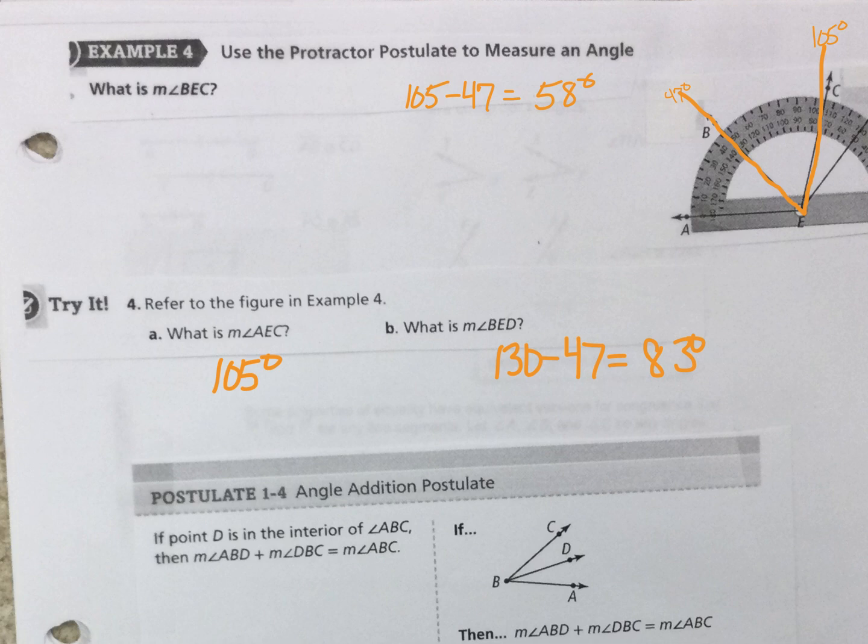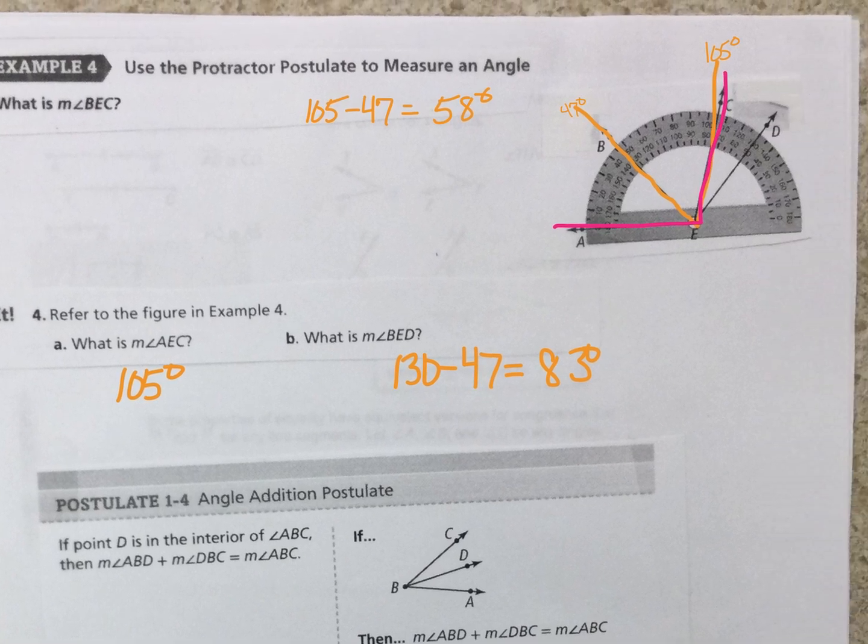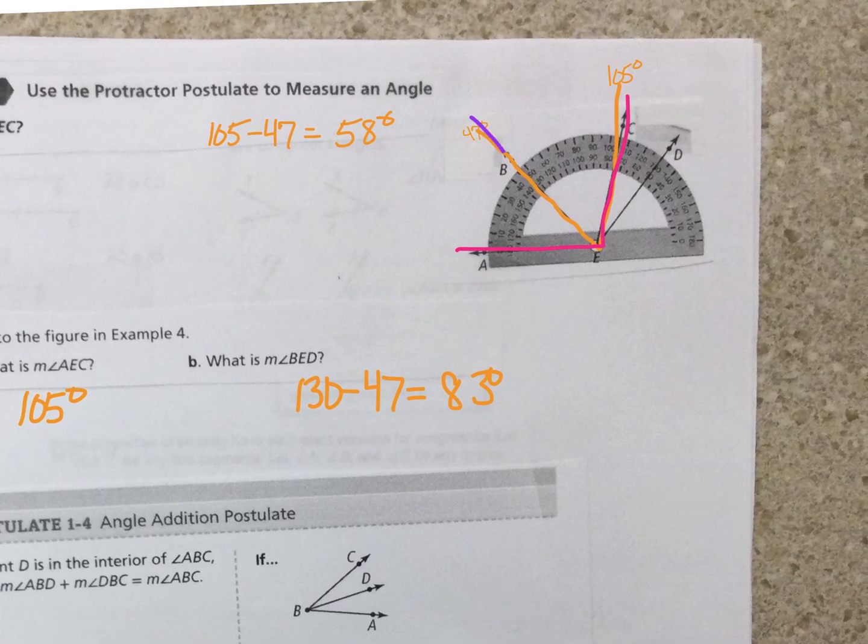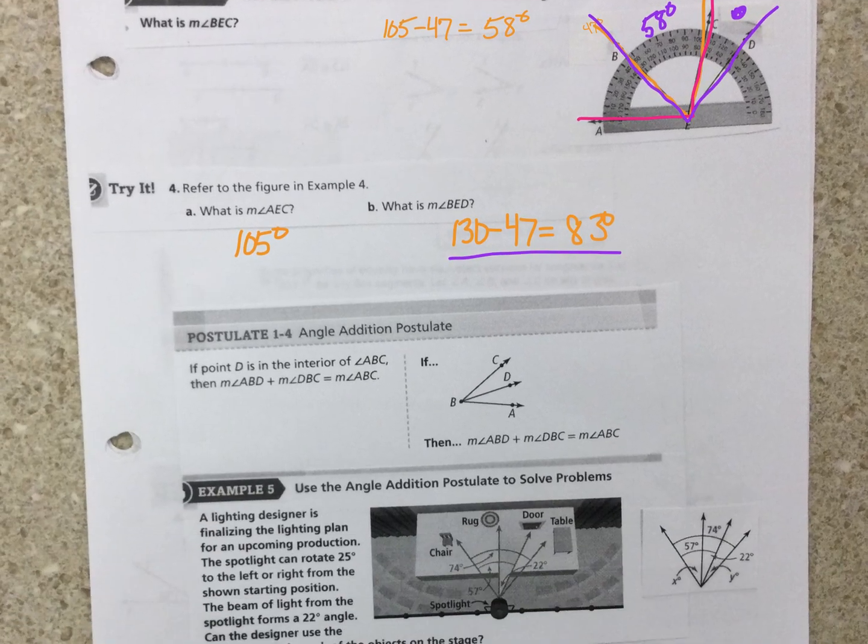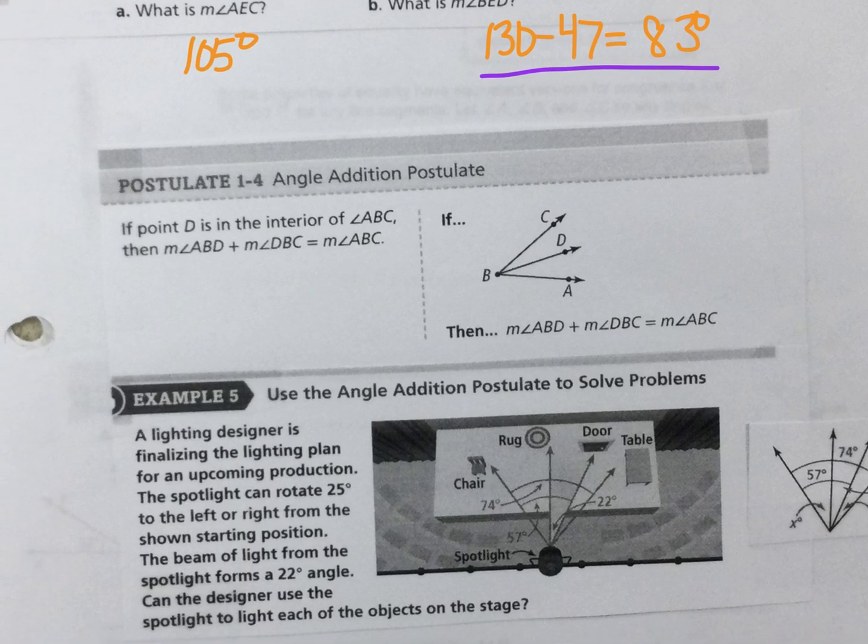So AEC is this first one, and of course that's easy, 105 degrees. And then BED would be this. Well, I already knew this was 58, right? Or you can do what I did here, 130 minus 47, or you can do 58 and whatever this is here and add them together.